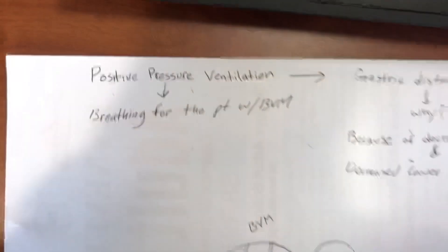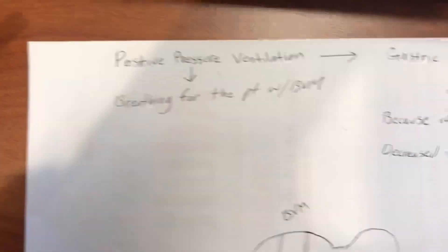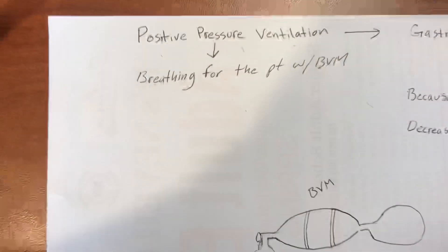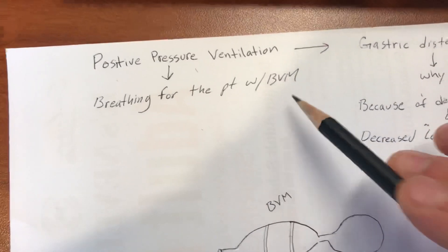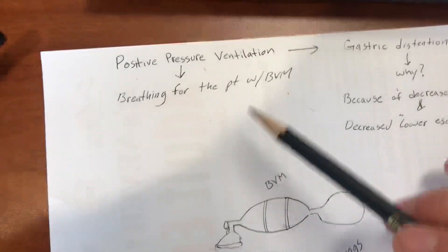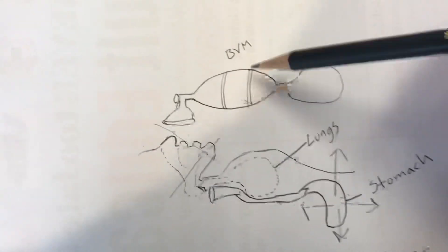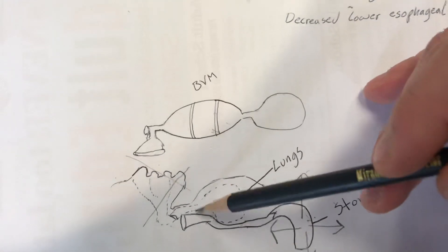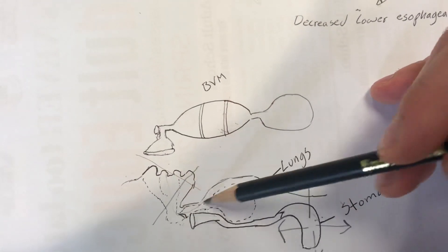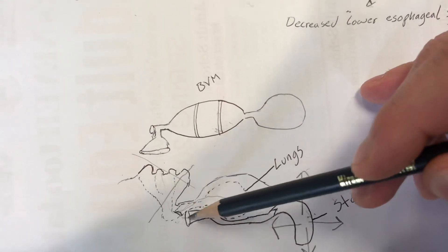Positive pressure ventilation is breathing for a patient with the BVM - that's one way positive pressure ventilation occurs. When you breathe for a patient, sometimes the air that is meant to go into the lungs actually goes into the GI tract and down into the stomach.